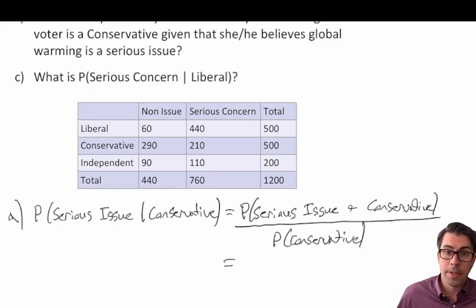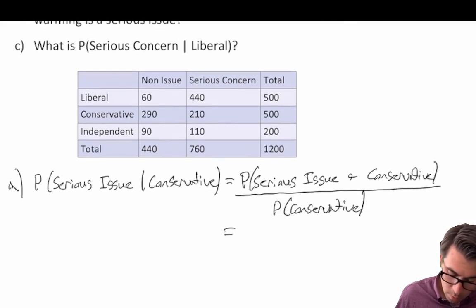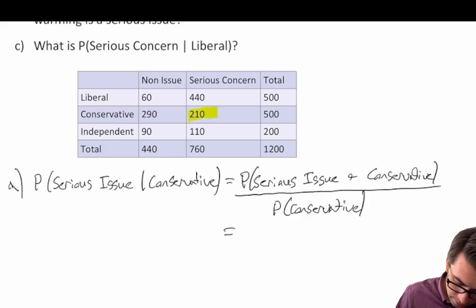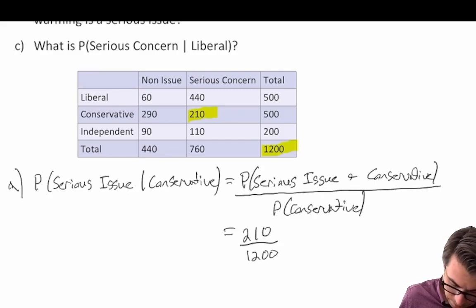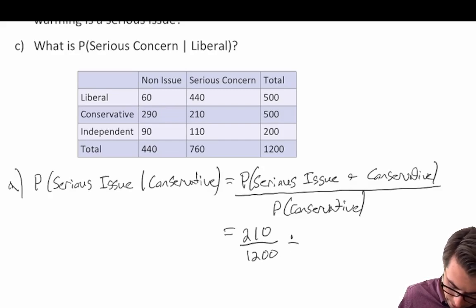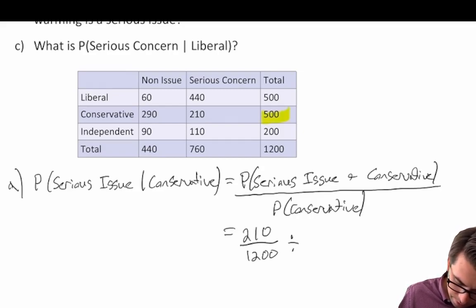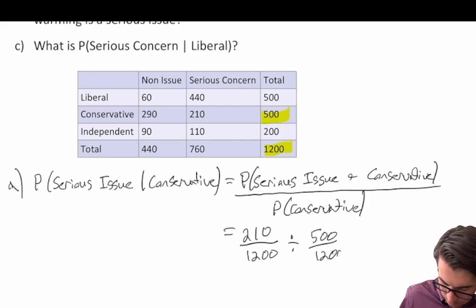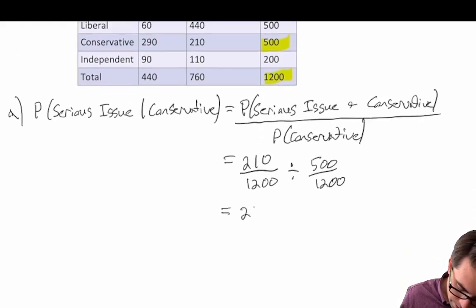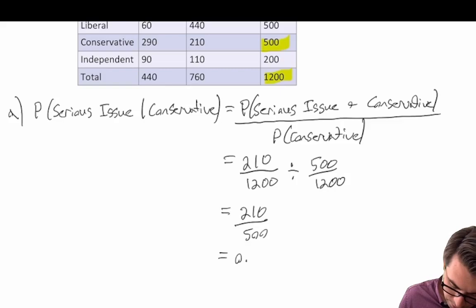We don't have probabilities in our table, but we can get them easily. The joint probability of serious and conservative is 210 divided by 1200. The marginal probability of conservative is 500 divided by 1200. The 1200s cancel out, and what we end up with is 210 divided by 500, which gives us a probability of 0.42.